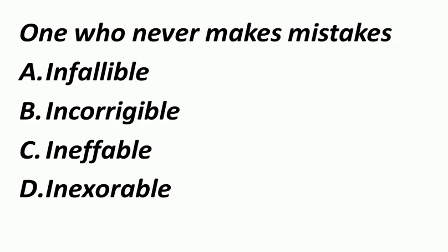One who never makes mistakes — जो कभी गलती नहीं करता हो. ऐसे व्यक्ति को बोलते हैं Infallible. Incorrigible मतलब इसको सही ना किया जा सके — that cannot be corrected or changed. Ineffable मतलब unspeakable — जो बोल नहीं पाता, express नहीं कर पाता, beyond expression in words. Inexorable मतलब impossible to prevent or stop.